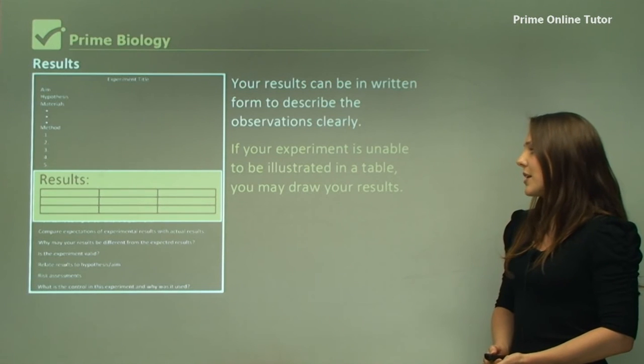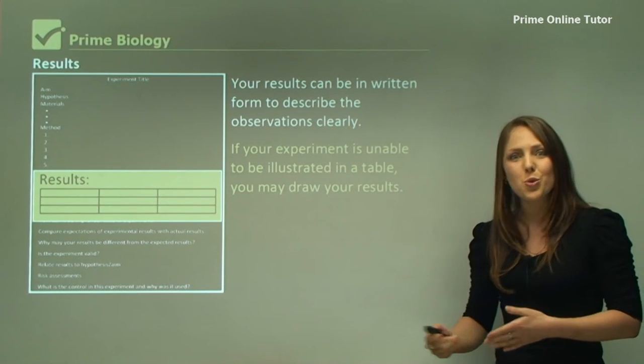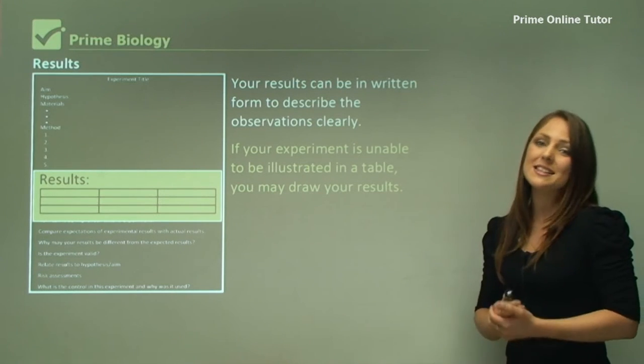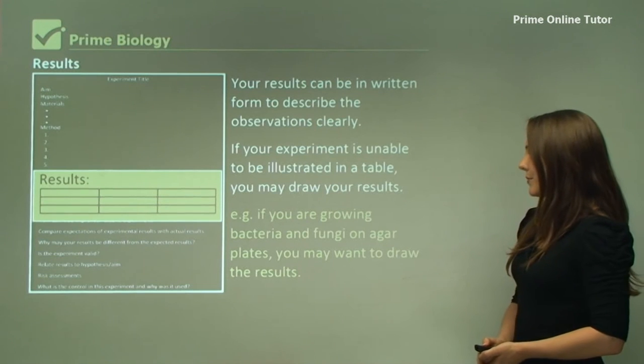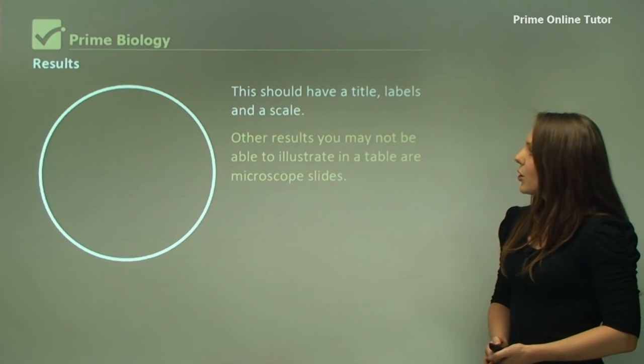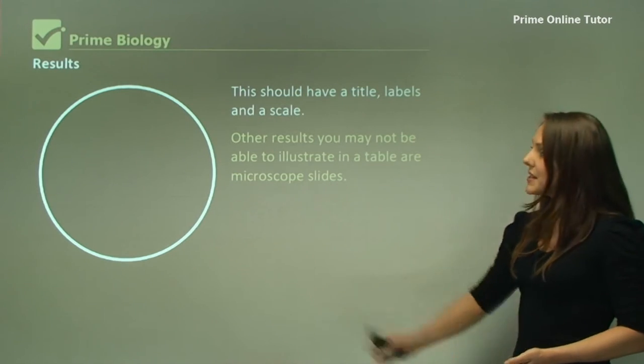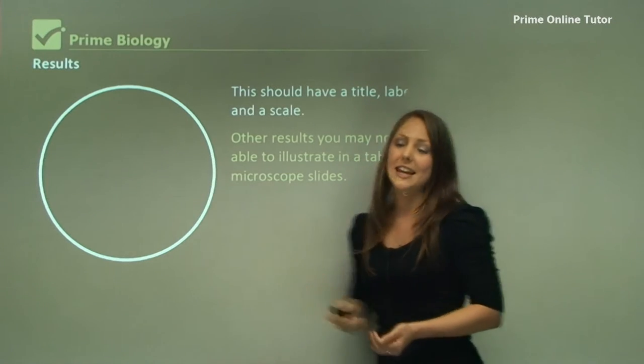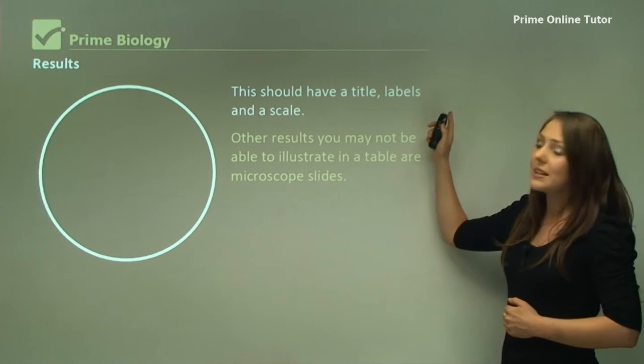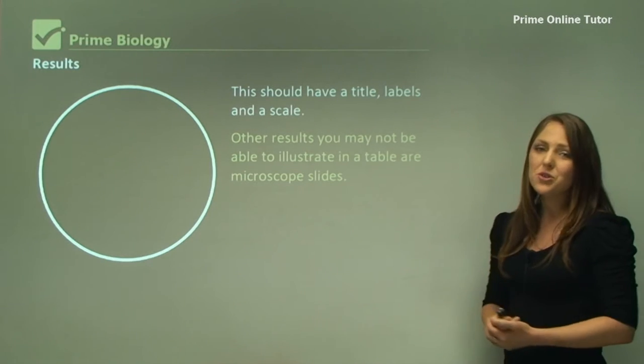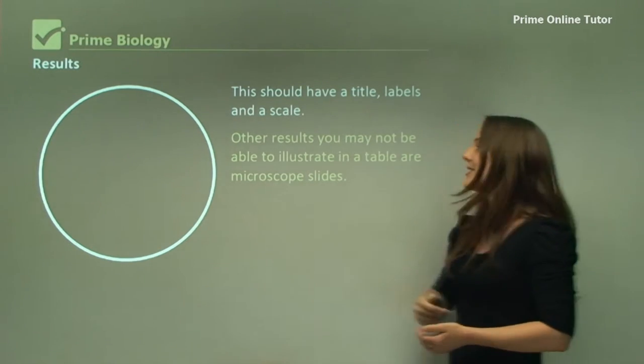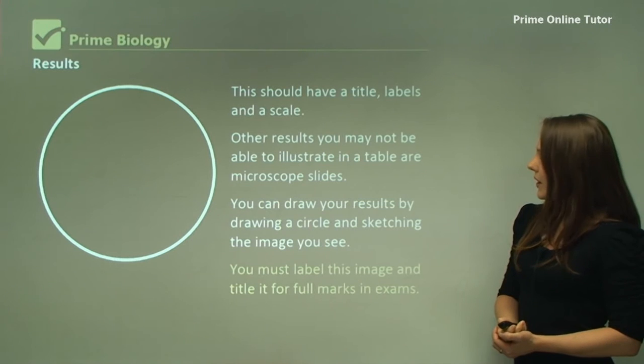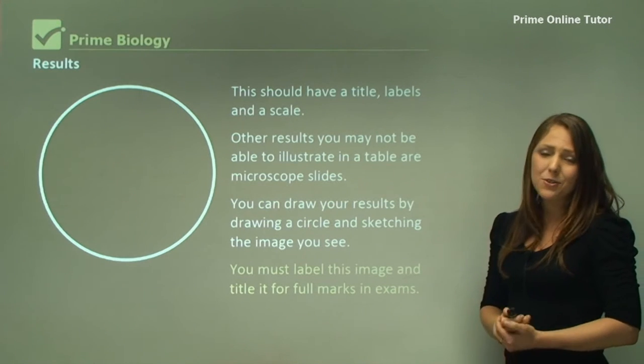If your experiment is unable to be illustrated in a table, you can also draw your results. For example, if you're looking at an agar plate with bacteria and fungi, you can draw those instead of putting it in a table. You would draw the petri dish outline and then draw the bacteria and fungi in that. You should title this, it should be labeled, and also show a scale, especially if it's a microscope slide.